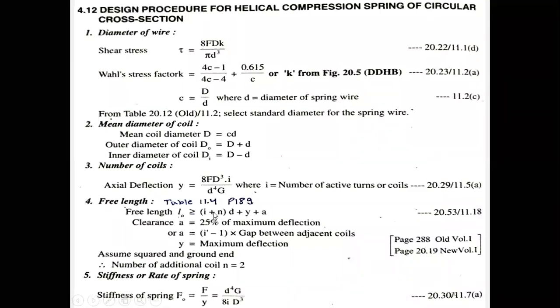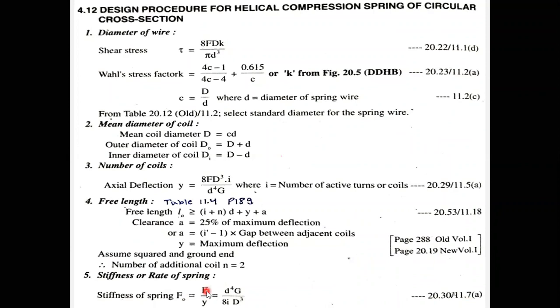Once you calculate a, substitute into the free length equation to get the free length. Note: the number of additional end coils N equals 2 for a grounded end assumption. After free length, calculate the stiffness using the formula: stiffness f₀ = F/y, which is equation 11.7b in the data book. With applied load F and maximum deflection y both given, you can directly compute spring stiffness.